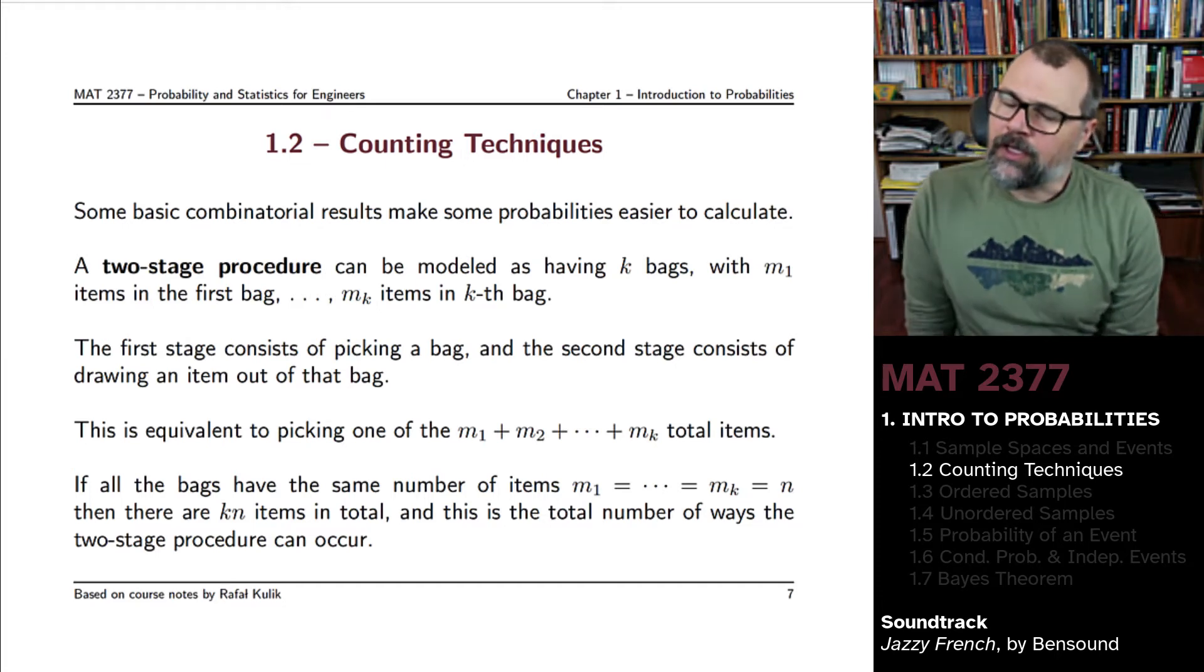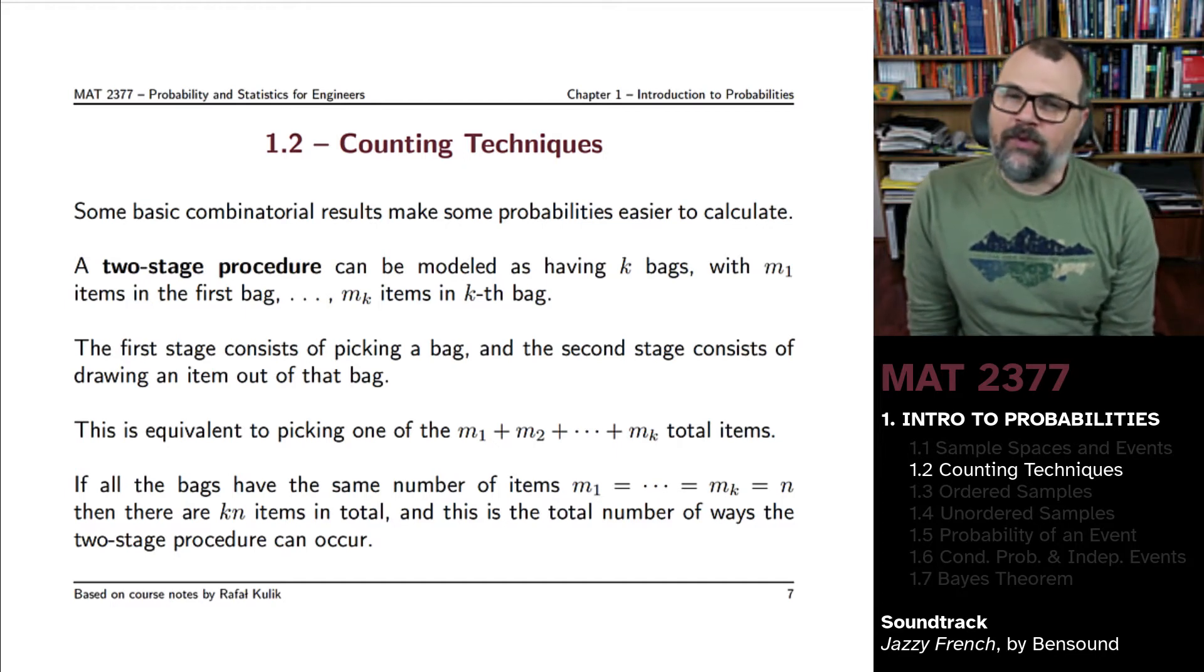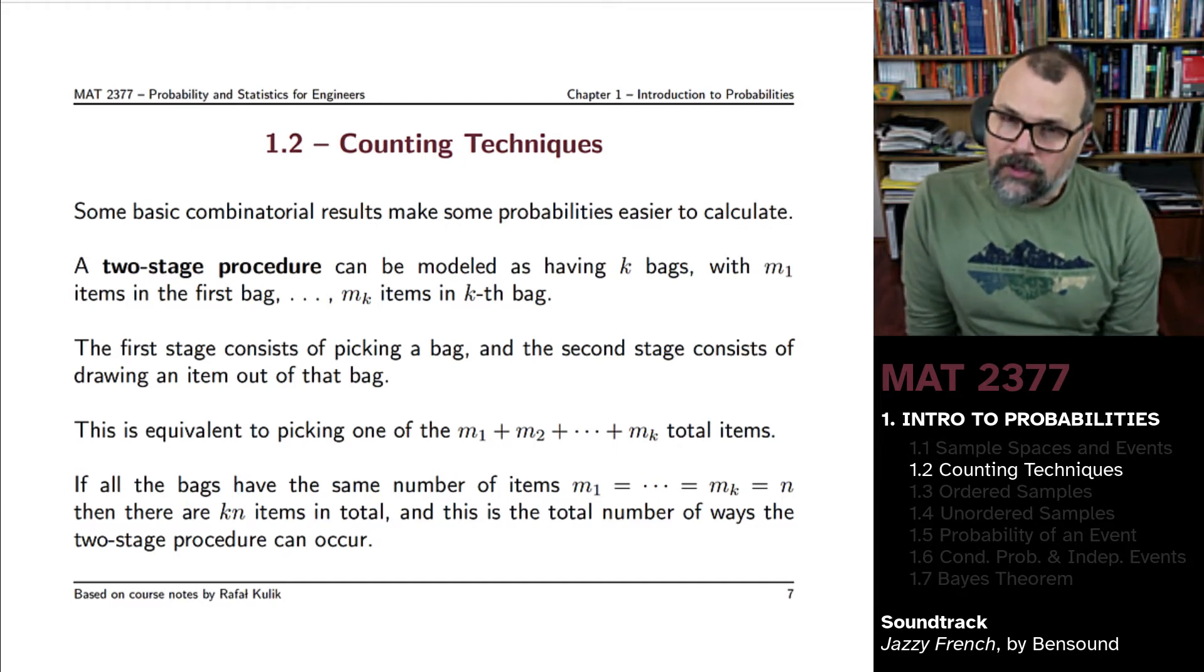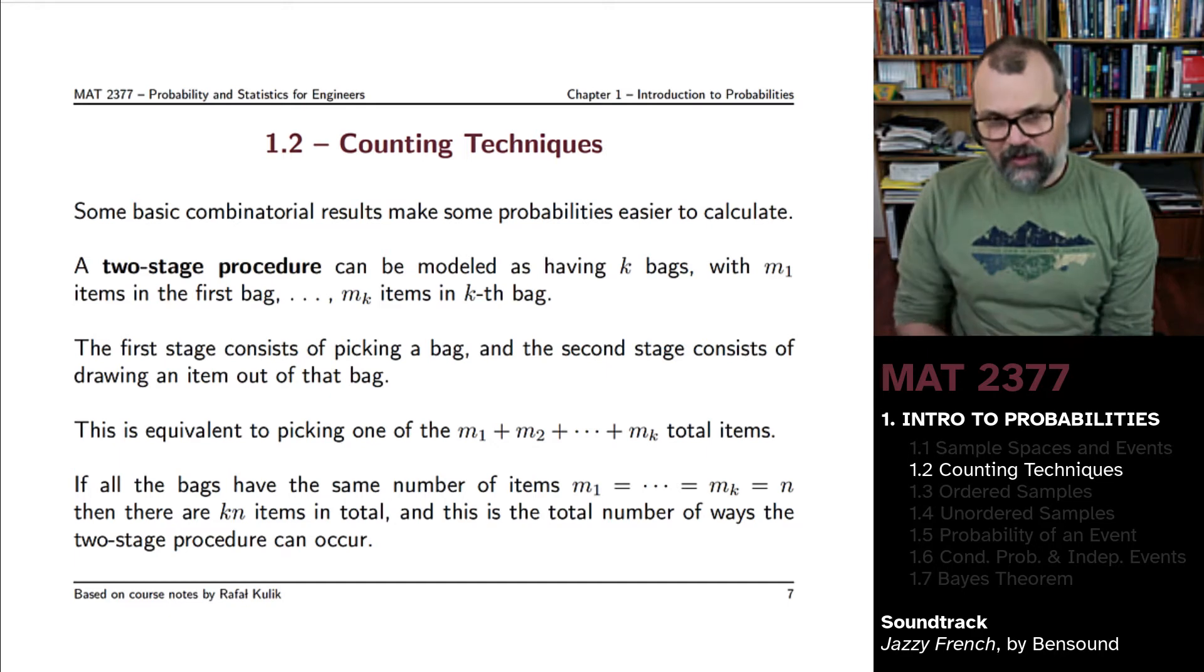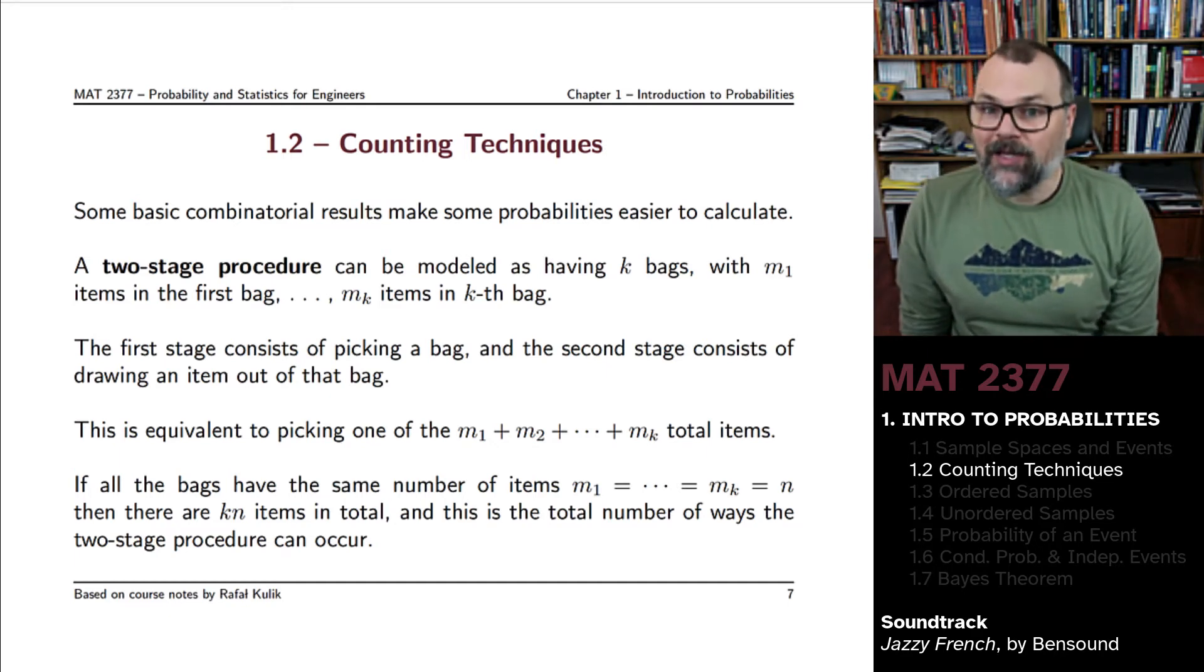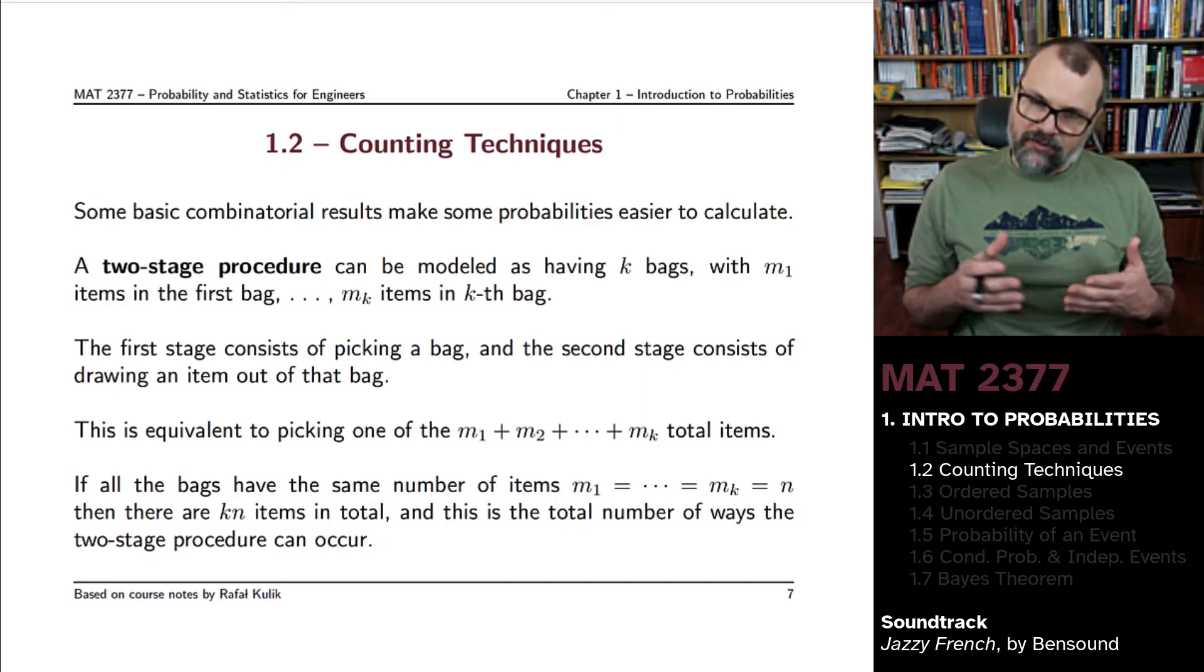One of the challenges we have when we try to solve probability problems is that we need to find a way to count the number of potential outcomes correctly. When there's only five or six outcomes, that's not too difficult to do. The events are not that complicated.